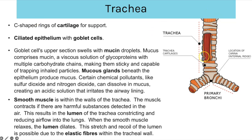Starting with the trachea — the windpipe — you have these c-shaped rings of cartilage, which you can see here in beige, providing structural support so the airway is constantly open and doesn't get flattened. It's c-shaped rather than a complete ring because your oesophagus sits behind it, and you don't want hard cartilage interfering with the oesophagus as it contracts and relaxes during peristalsis. You also have ciliated epithelium with goblet cells — the cilia sweep mucus up and out of the lungs to prevent infection.